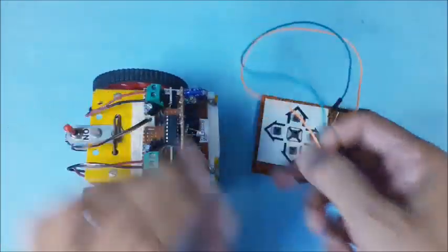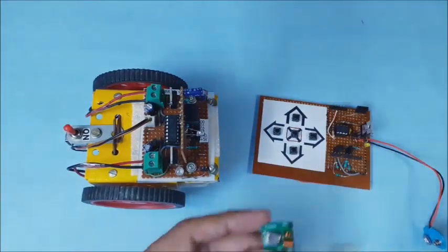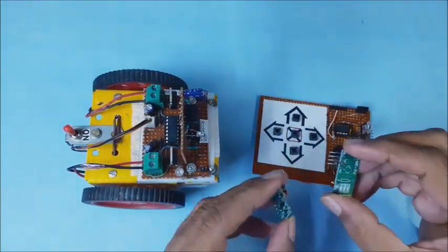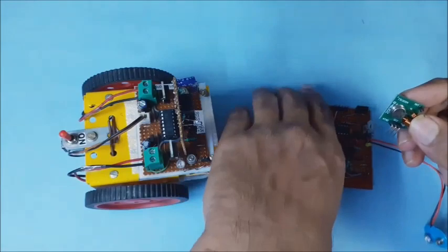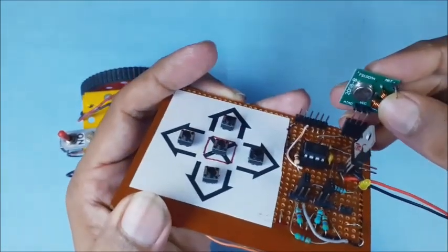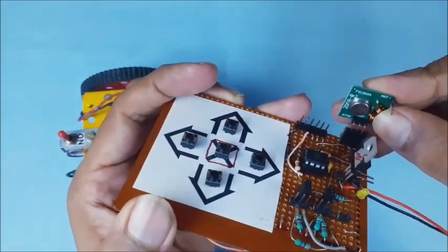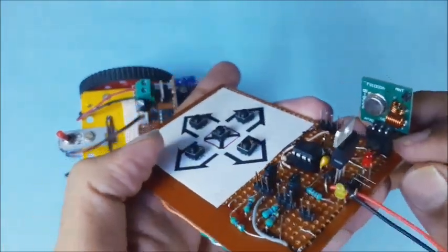Now, remove the wire connections. A small set of RF transmitter and receiver modules are used as wireless connection. Connect the RF transmitter module to the transmitter board.